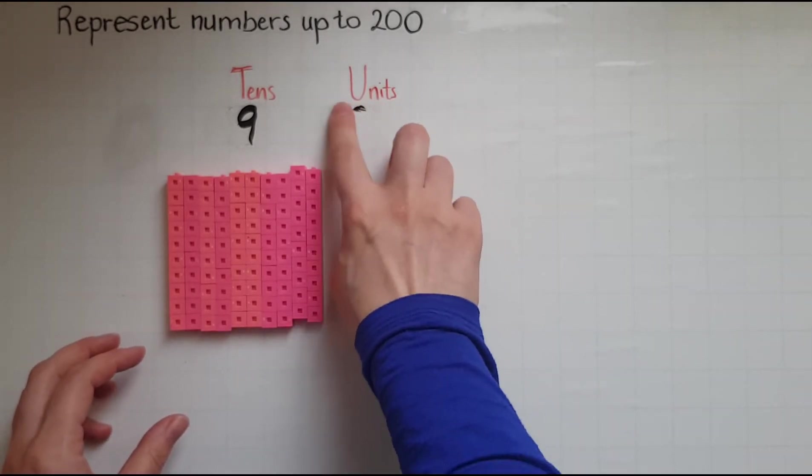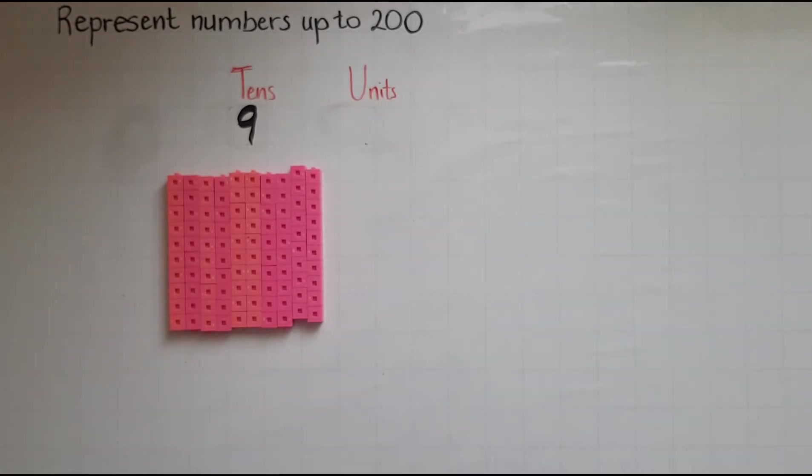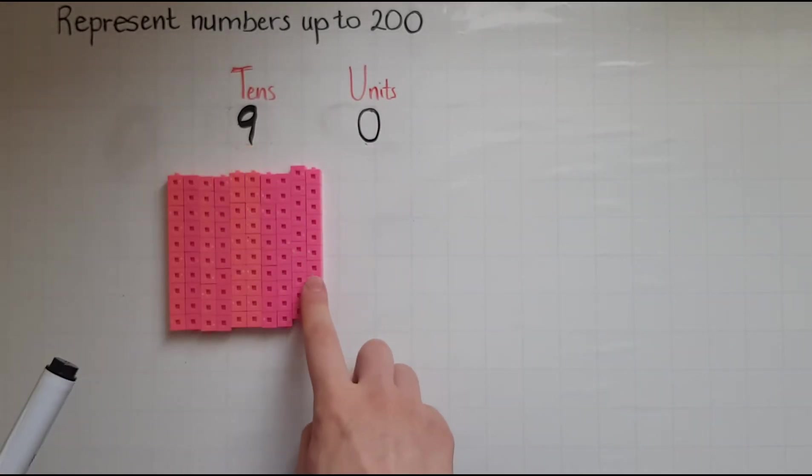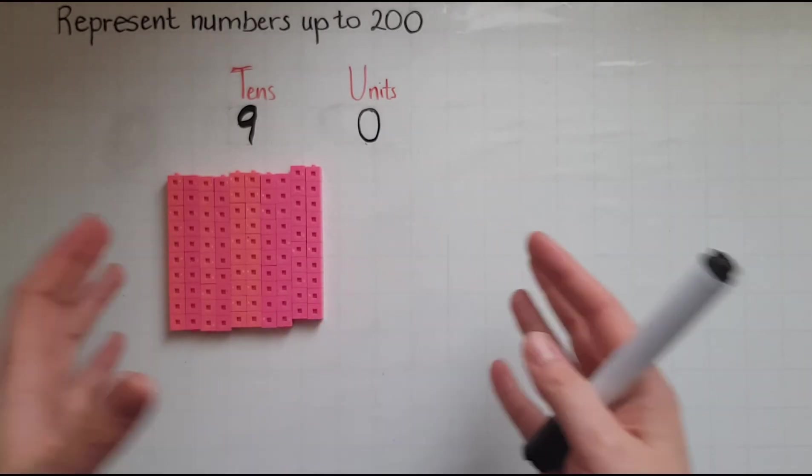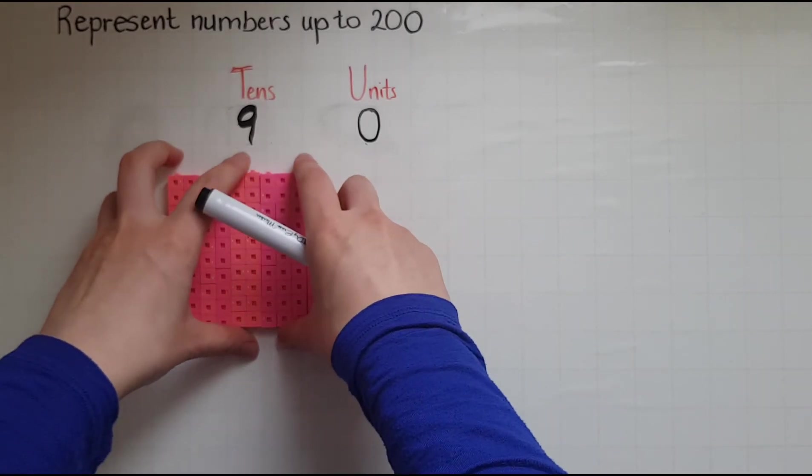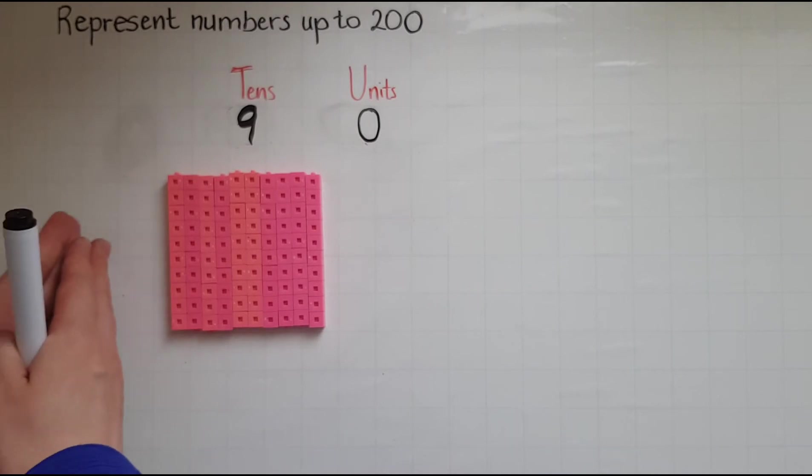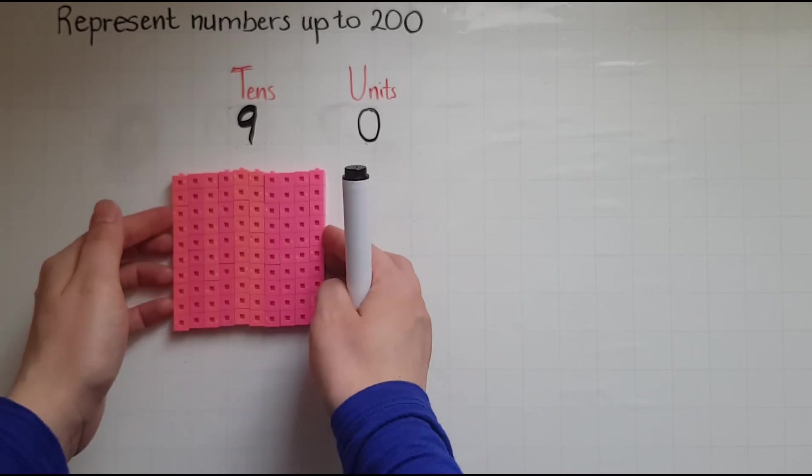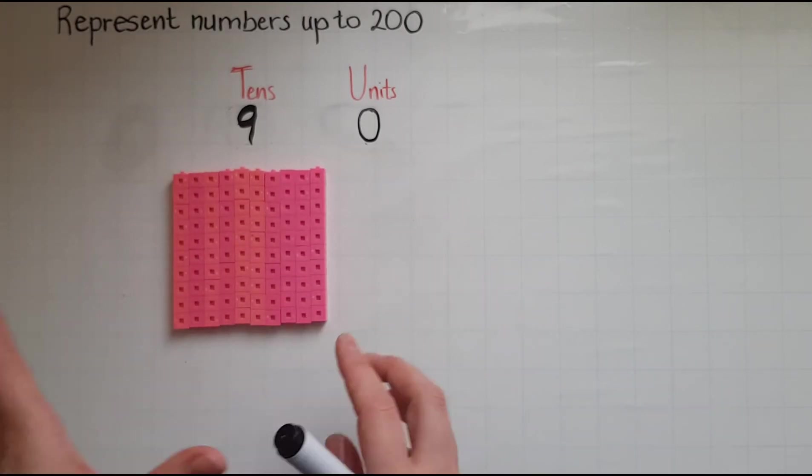So now we've got a new block of 10 which can or should join the tens. So there are no units, no single cubes. But do I still have nine tens? There are actually 10. And again, just like with the units, if you've got a block of 10 of them, it's got to move to the next column on the left.